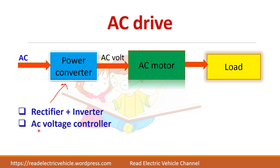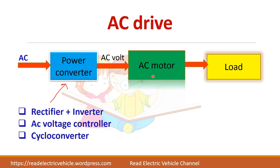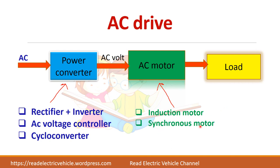Alternatively, you can use an AC voltage controller to change the magnitude of the AC output voltage, or you can go for a cycloconverter if you want to control the frequency of the AC motor. So these three power electronic converters can be used for AC motors.